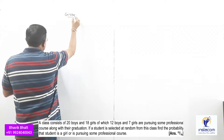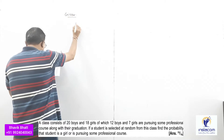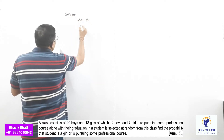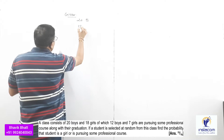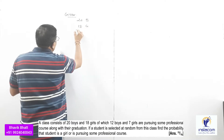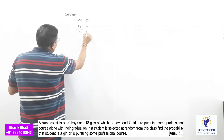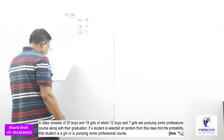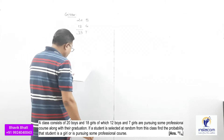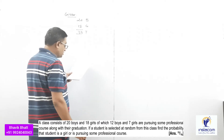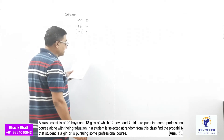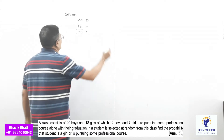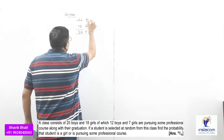Things given: a class consists of 20 boys and 18 girls, meaning there are a total of 38 students. In this class, 12 boys and 7 girls are pursuing some professional course along with their graduation.